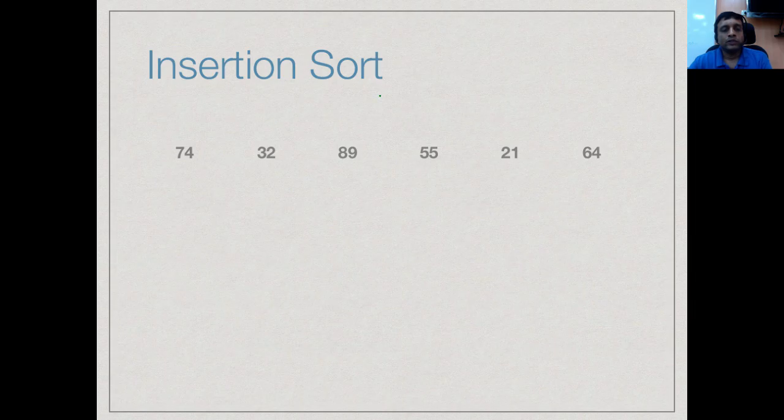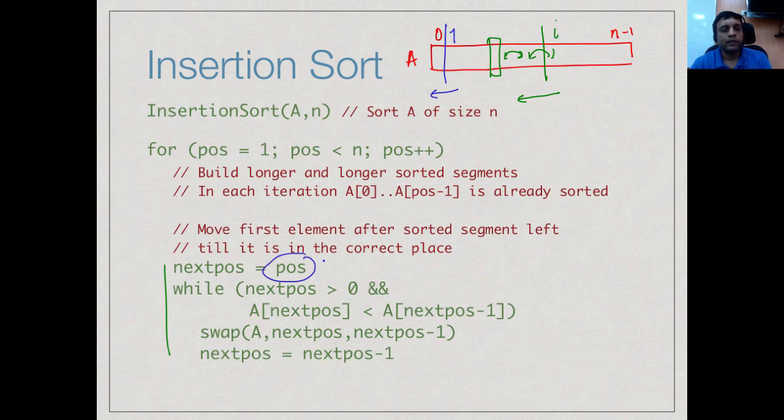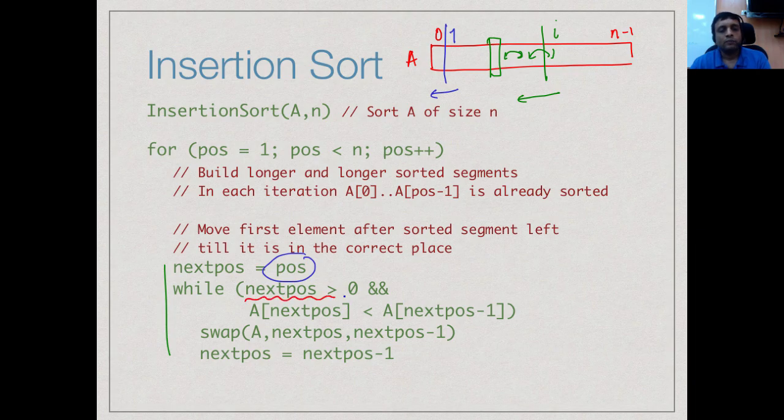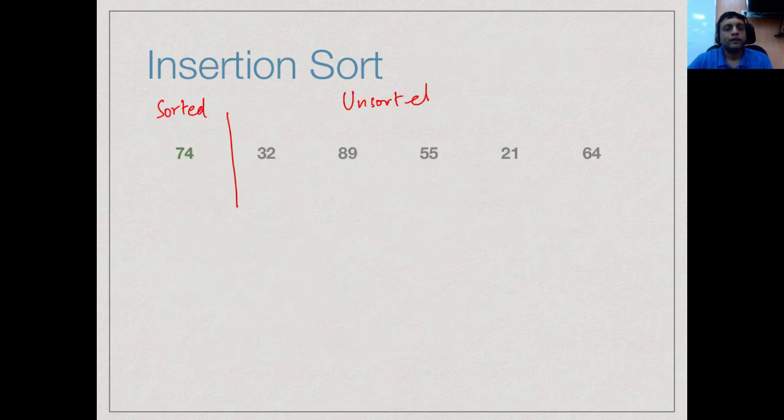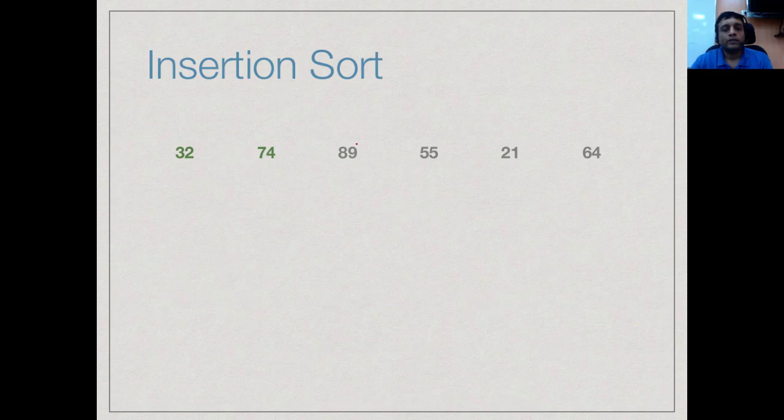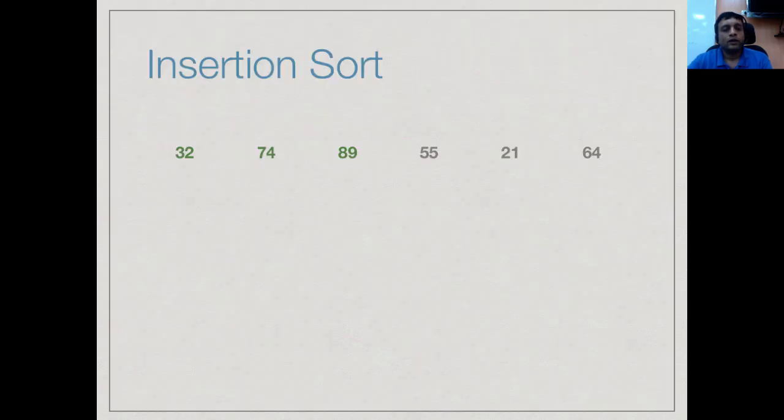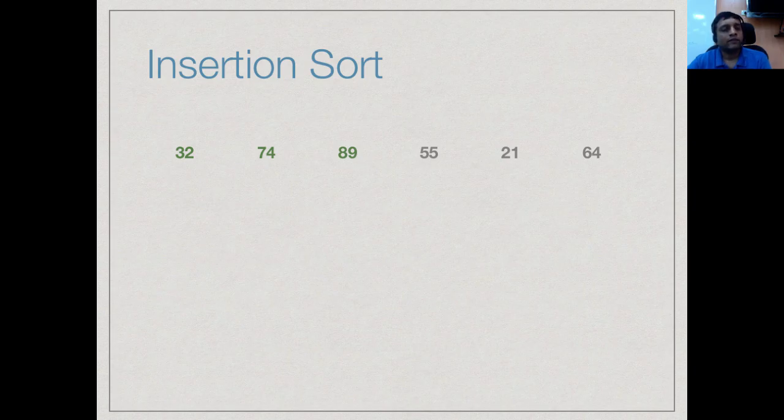We can see now how this works on our array. We first start with looking at this segment. This is my initial configuration. This is sorted and this is unsorted. Now I will immediately see that 32 is bigger than 74, so I will exchange, and then because it reaches the beginning—one of the conditions in that loop is that if I reach the beginning of the loop, if next_pos is equal to 0, I will also stop. Having done that, I must try to insert 89 into this. I will find that 89 is already bigger than 74, so nothing needs to be done.